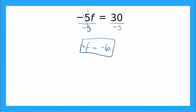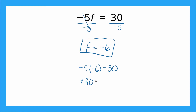Now let's check it with substitution. Wherever I see an F in my original equation, I'm going to plug in negative six. So I have negative five times negative six equals 30. Two negatives multiplied together give a positive, so five times six gives me 30, which equals 30. And that checks out.